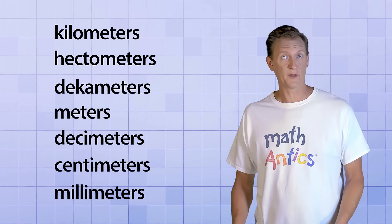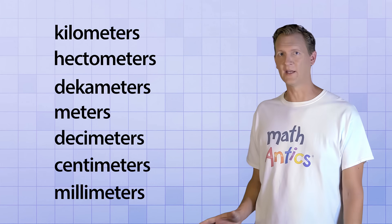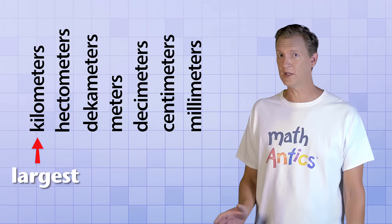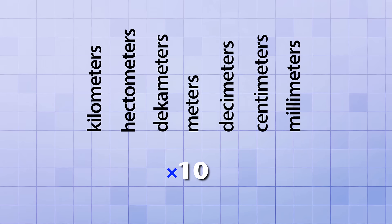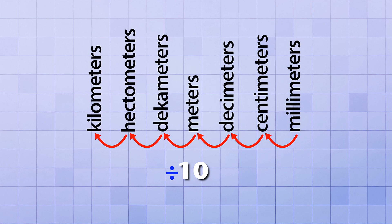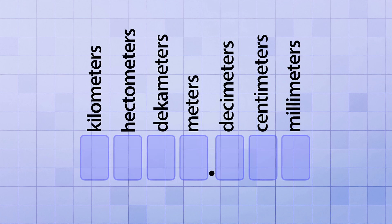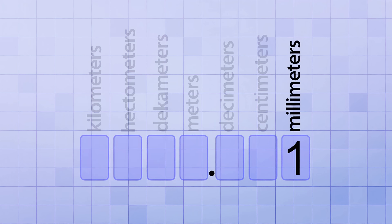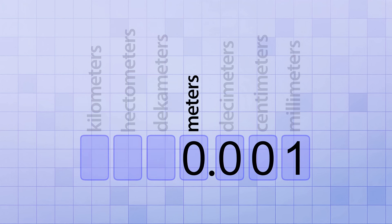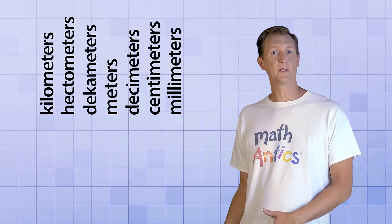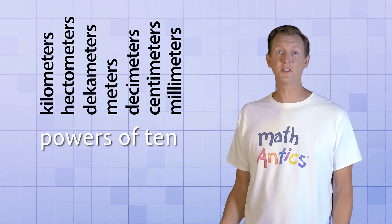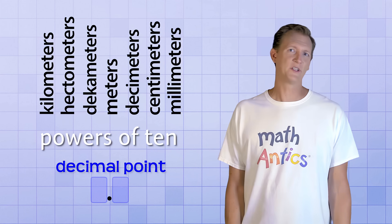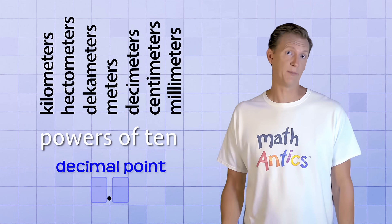So why does the metric system make working with units easier? Notice the pattern we get if we put these units in order with the largest unit on the left and the smallest unit on the right. Each unit is 10 times bigger than the unit immediately on its right, and 10 times smaller than the unit immediately on its left. That's exactly the same pattern that the number places use in our decimal number system. This diagram can give you an idea of how the units relate to each other. For example, 1 kilometer is the same as 1,000 meters, and 1 millimeter is the same as 0.001 meters, or 1 one-thousandth of a meter. Because all these different units of length are based on powers of 10, you can convert between them just by shifting the decimal point one place at a time, which is equivalent to either multiplying or dividing by 10, depending on which direction you shift.